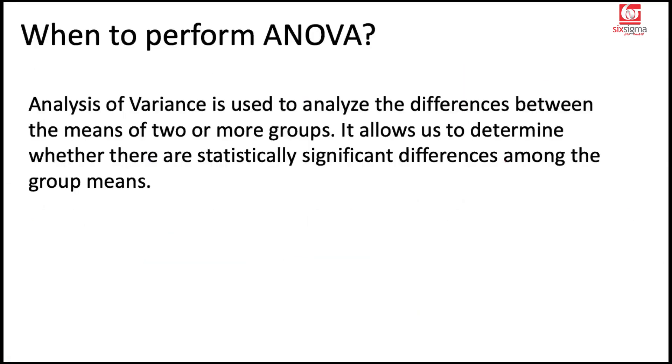When to perform ANOVA. ANOVA, or analysis of variance, is used to analyze the differences between the means of two or more groups. It allows us to determine whether there are statistically significant differences among the group means. Up to two groups, we could conveniently do a two-sample t-test with independent samples. But the moment we go beyond two samples, we'll have to rely on something called ANOVA, subject to certain assumptions.